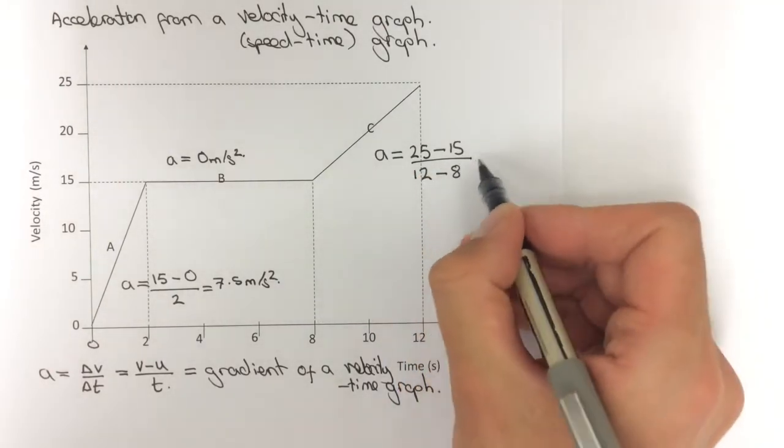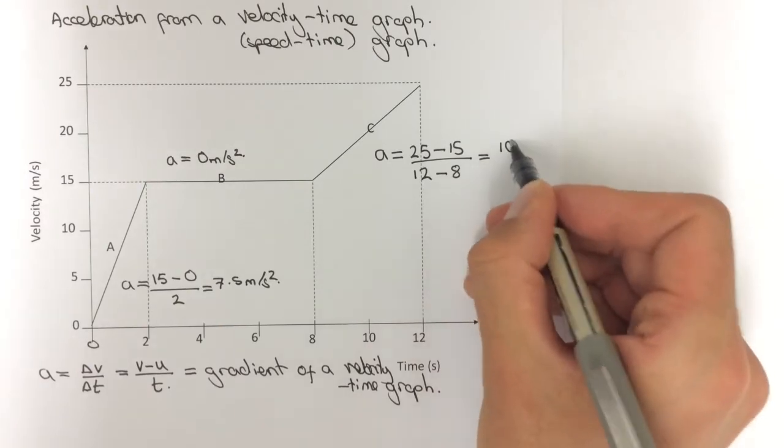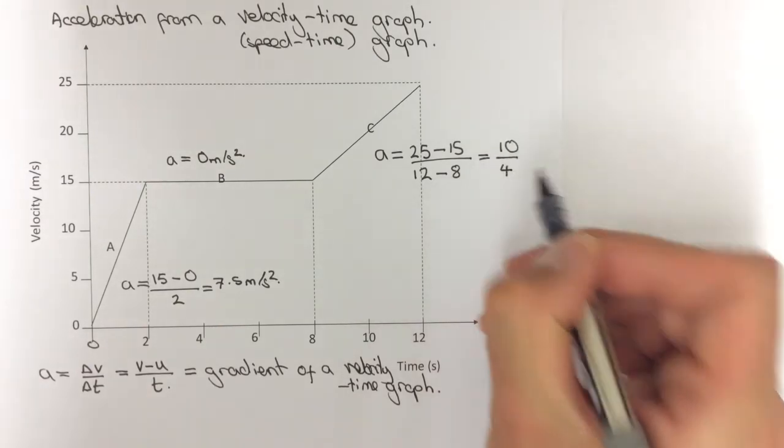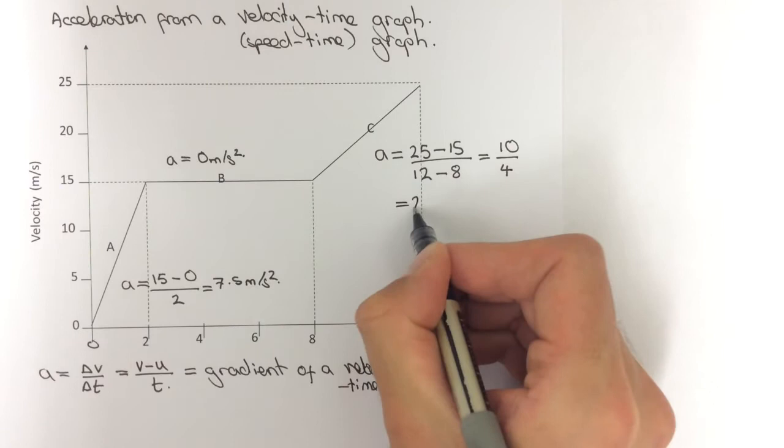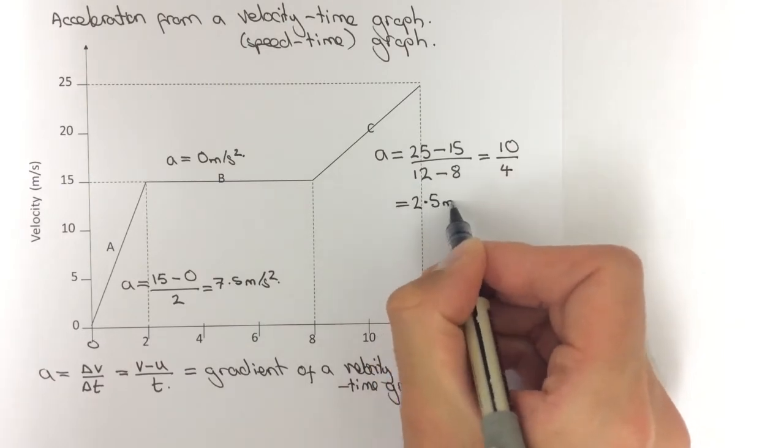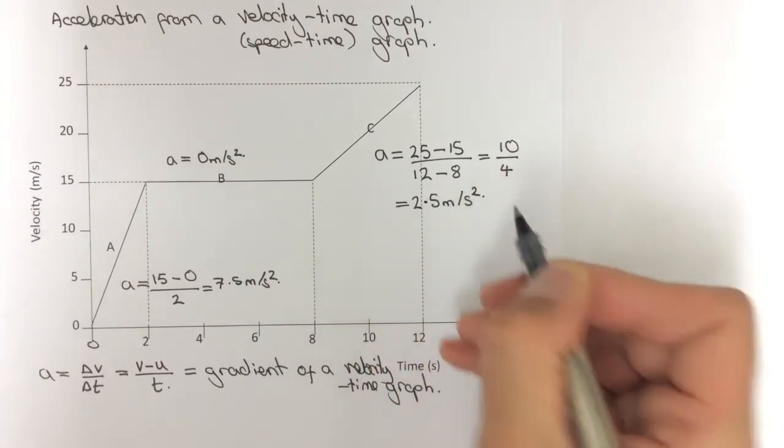which is 8, which gives us 10 divided by 4, which would give us 2.5 meters per second squared.